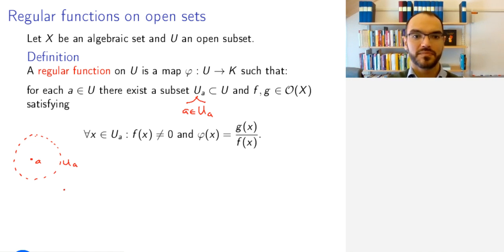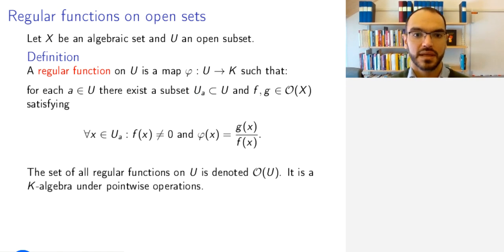So now I've drawn the neighborhood in this intuitionistic fashion, but you see the point that you want to be able to locally write your function as a quotient of regular functions. And the set of all regular functions is denoted by O(U), as usual, and it's a K-algebra under pointwise operations, so pointwise multiplication, pointwise addition, and pointwise action of scalars. This you can check for yourselves.